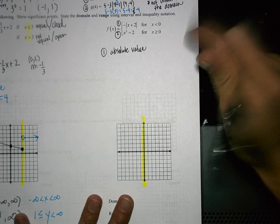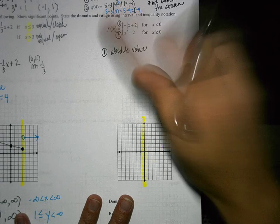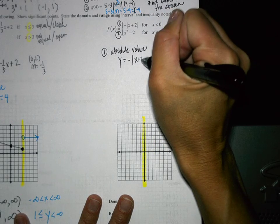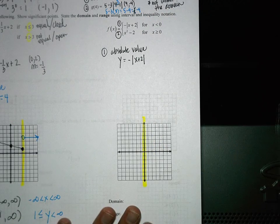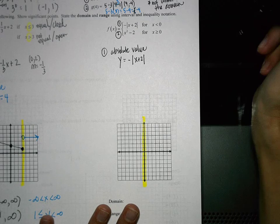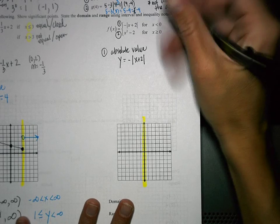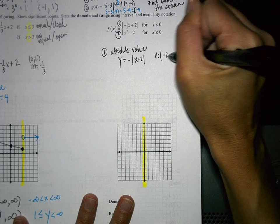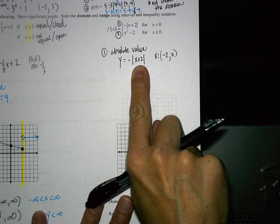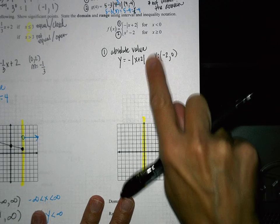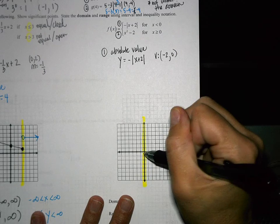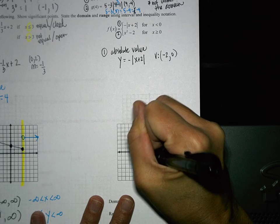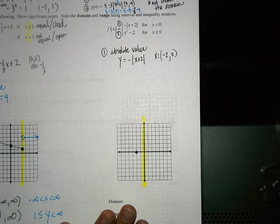I'm going to write the equation as y equals negative absolute value of x plus 2. Where would be my starting point — also called my vertex? That is at (negative 2, 0), because inside the absolute values we set that equal to 0, which makes negative 2, and nothing's being added at the end, which is 0. When I go to (negative 2, 0), I can make a solid point there because it's not on my highlighted line.